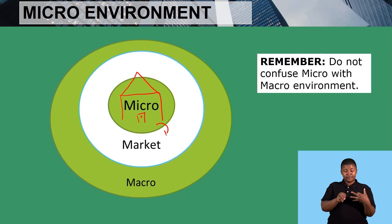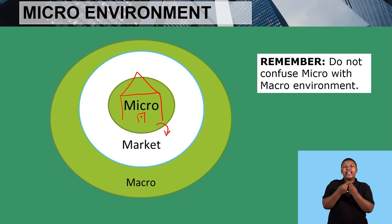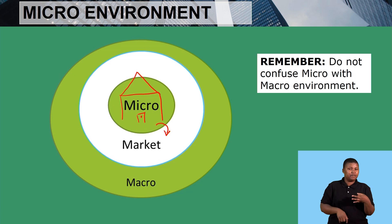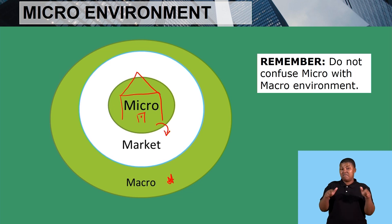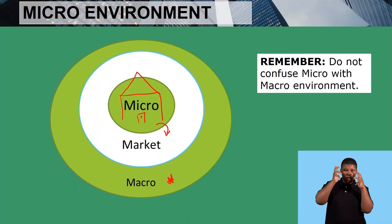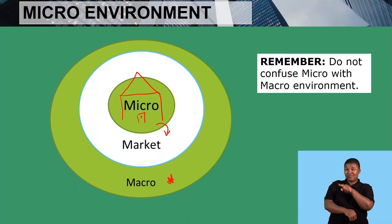The micro environment is everything that happens inside the business that we can control. The next environment outside the business is our market environment — where transactions take place. Our last environment is our macro environment, the biggest environment that influences the business. Always remember: do not confuse the micro with the macro environment because there is a big difference between the two.